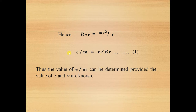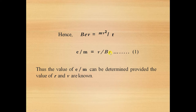We can get E/M by obtaining the value of the velocity of the electrons, the strength of the magnetic field, and the radius of the arc of the circle. However, there is a problem: we cannot experimentally determine the velocity of the electrons in this particular experiment, and we cannot measure the radius of the arc of the circle directly. Practically, it is impossible, and therefore we go for an indirect method, making use of the electric field to obtain the values of these parameters.